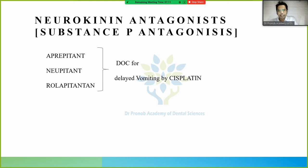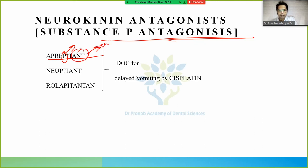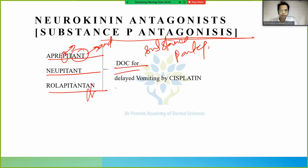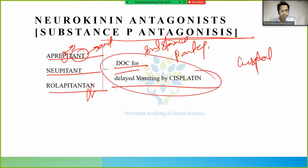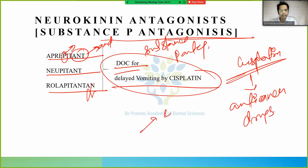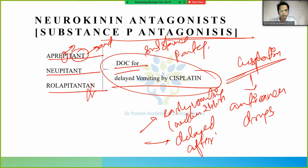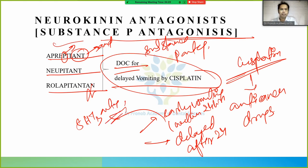Neurokinin antagonists, also called substance P antagonists, include aprepitant, netupitant, and rolapitant. These are the drug of choice for delayed vomiting caused by cisplatin, which is the most emetogenic anti-cancer drug. Early vomiting (within 24 hours) is treated with 5HT3 antagonists; delayed vomiting (after 24 hours) is treated with substance P antagonists. Substance P is a neuropeptide acting as a neurotransmitter and neuromodulator.